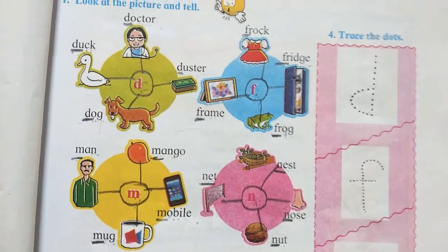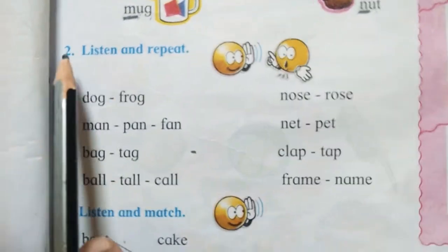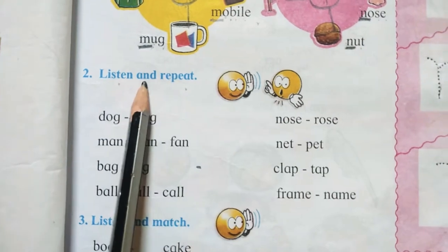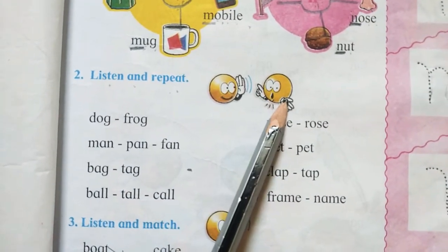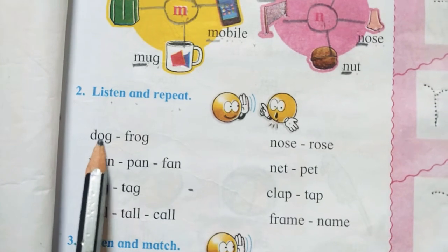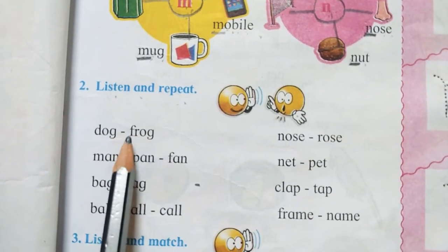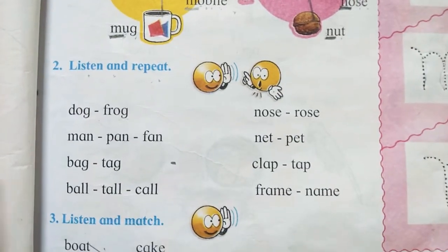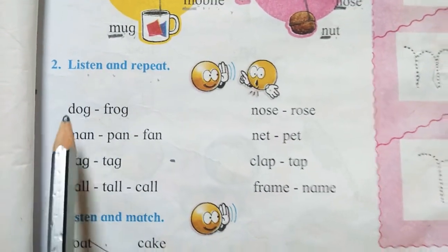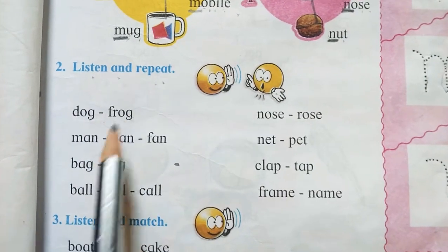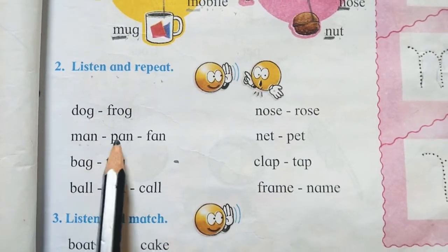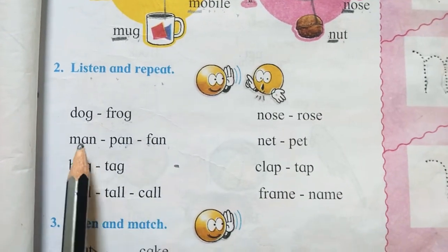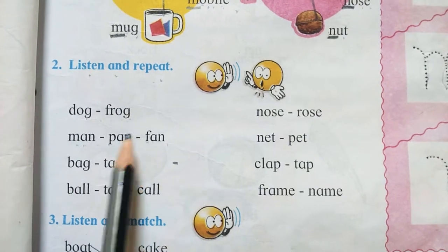Next activity: Listen and repeat. Listen म्हणजे ऐका आणि repeat म्हणजे मागोमाग बोला. D, O, G - dog. F, R, O, G - frog. Dog, frog. M, A, N - man. P, A, N - pan. F, A, N - fan. Man, pan, fan.